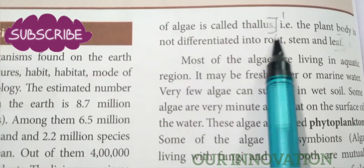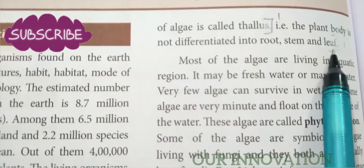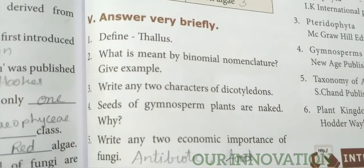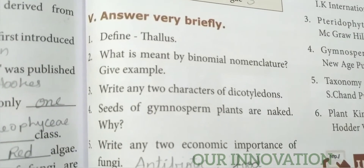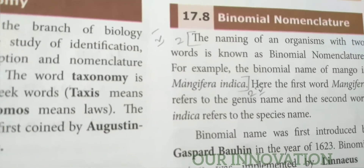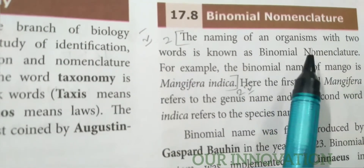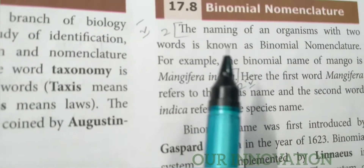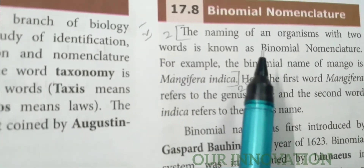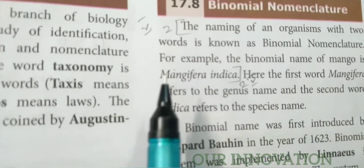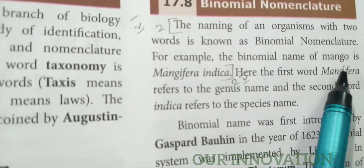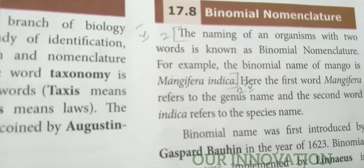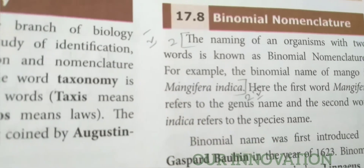The naming of an organism with two words is known as binomial nomenclature. For example, the binomial name of mango is Mangifera indica. That is the second brief answer.